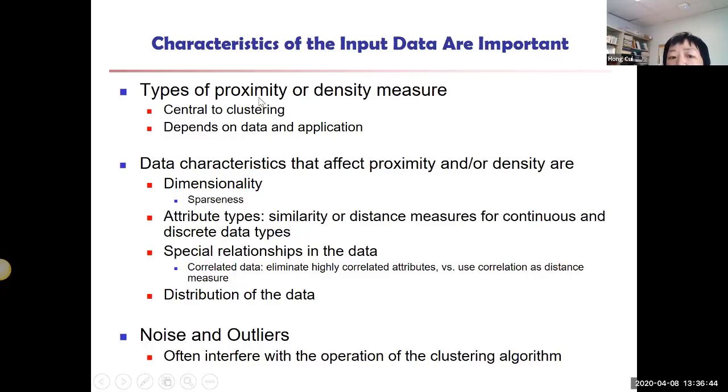You will see that for proximity measures, our usual distance measures work very well. We could use Euclidean distance, Manhattan, cosine similarity. For density-based measures, there are a whole set of measures that actually defines the density that we're going to look at next week. So those are going to give you a different result.